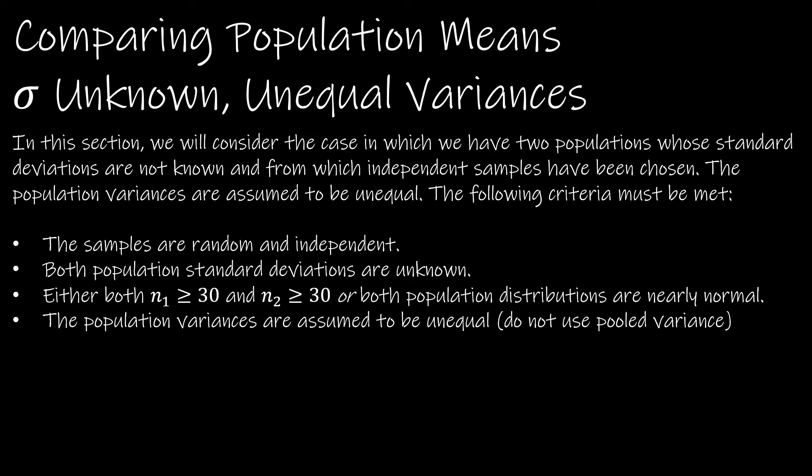We're going to take a look at what the conditions are, and you'll see that many of the conditions are the same. The samples have to be random and independent, just as before, and the population standard deviations have to be unknown. So this one's different than the last time, because on the last one we were dealing with known population standard deviations.